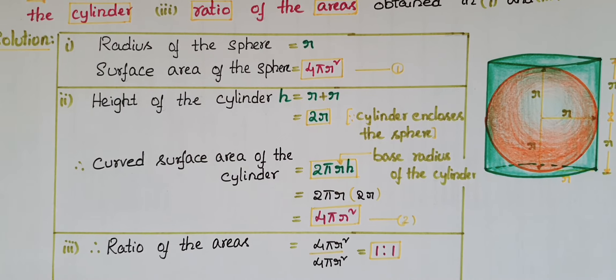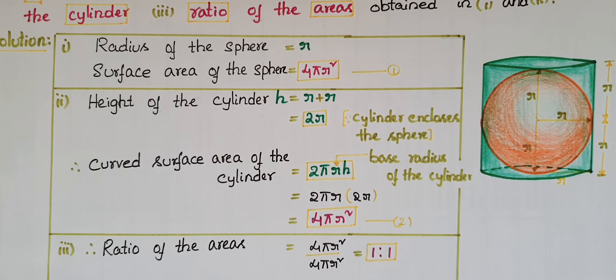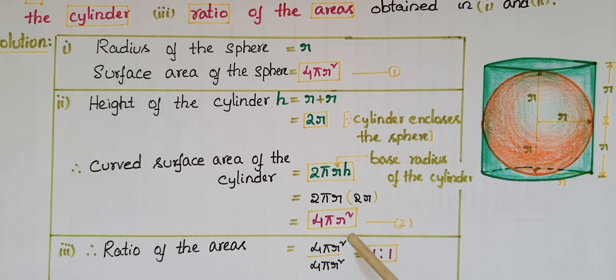Ratio of the areas is equal to 4πr² (this is first one) and second one 4πr². So 4πr² by 4πr² is equal to 1 is to 1.